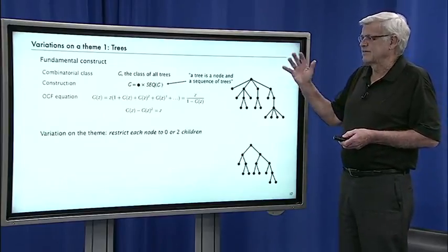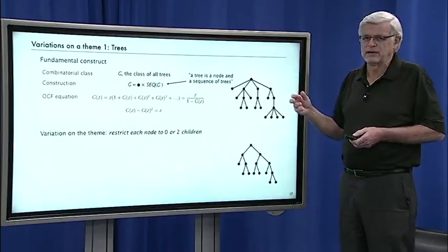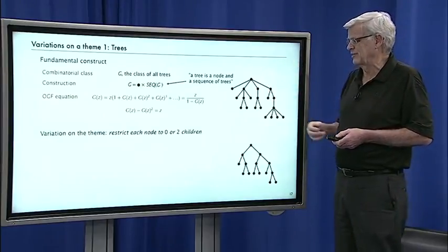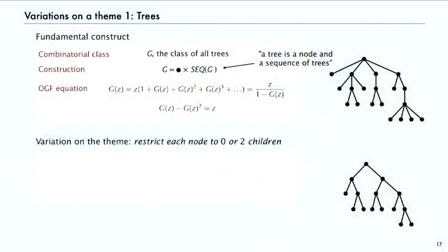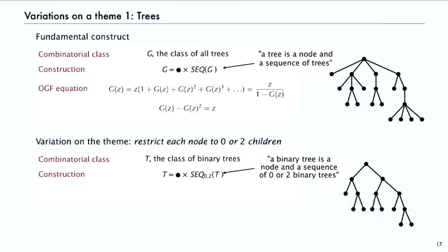So just in the context of trees, let's look at a few variations on a theme. So we said a tree is a node and a sequence of trees. Another variation is to say, well, each node can have either zero or two children. That's called a binary tree. And immediately you can write down a construct that's a variant on the basic construct that says a binary tree is a node and a sequence of zero or two binary trees.